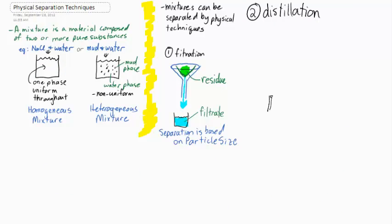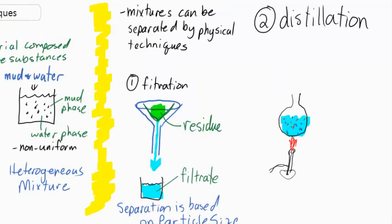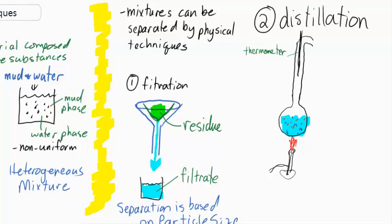Distillation is a different kind of physical separation. If we heat up a liquid in a round bottom flask, say alcohol and water, the two pure substances have different boiling points. The mixture of alcohol and water will boil at a certain temperature. We often need to keep track of this